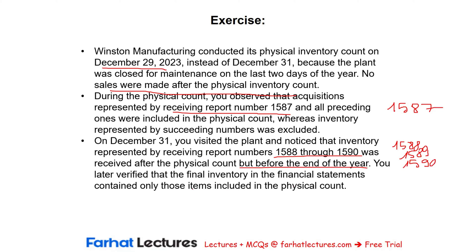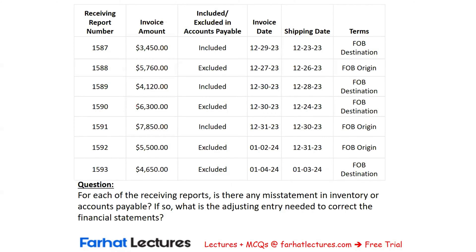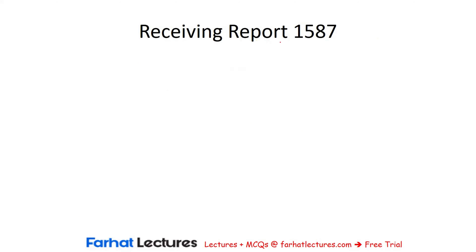You later verified that the final inventory contained only those items included in the physical count. While testing accounts payable at December 31, 2023, you obtained a schedule from the client to assist in testing the cutoff. The schedule includes the receiving report number, the invoice amount, and whether the amount was included or excluded in accounts payable, the invoice date, the shipping date, and the terms — which are very important to test the cutoff assertion. For each receiving report, is there any misstatement in inventory or accounts payable, and if so, what is the adjusting entry needed? We will look at each receiving report starting from 1587.